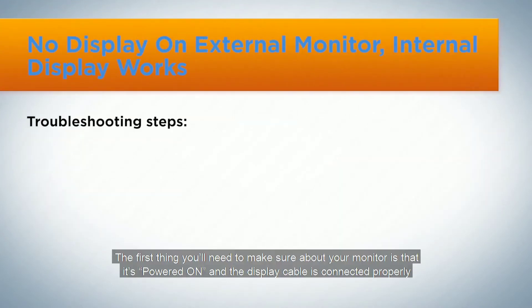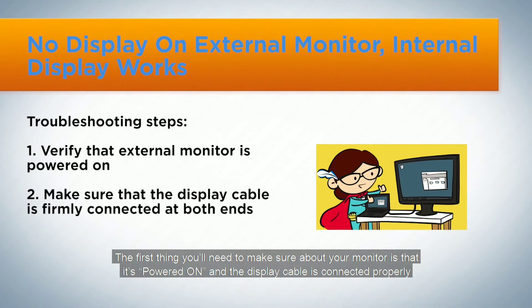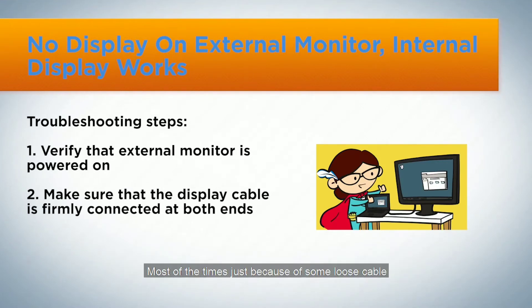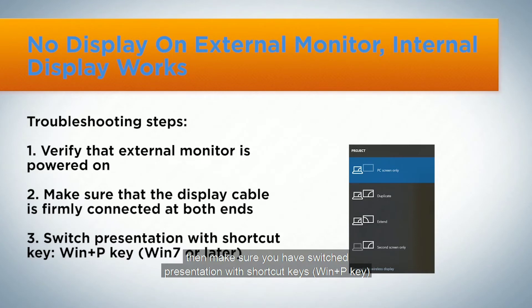The first thing you'll need to make sure about your monitor is that it's powered on and the display cable is connected properly. Most of the time, just because of some loose cable, a lot of people have this black blank display problem. If everything is connected properly and still nothing comes up on the monitor's screen, then make sure you have switched presentation mode with the shortcut keys Win and P.